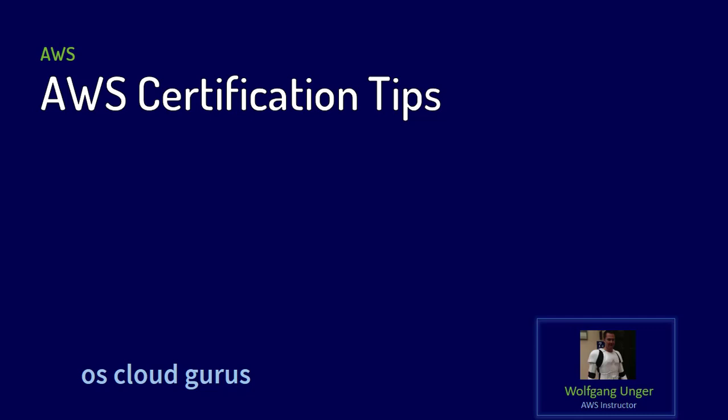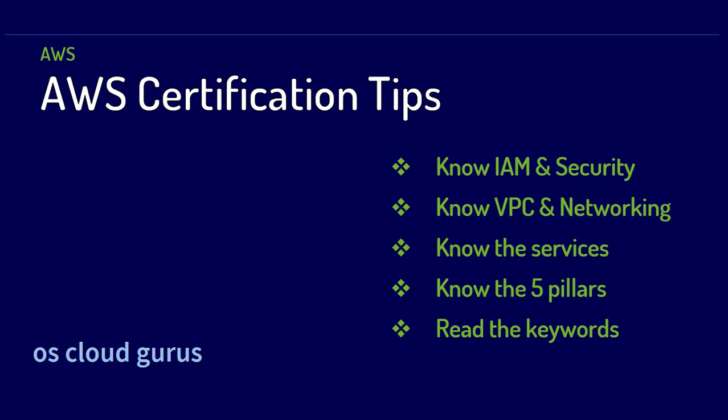Let's get an overview of what we'll cover. First, you have to know IAM and security, which is always a major topic in the exams. Another major topic is VPC and networking, which you should definitely know. Concerning other services, there are tons of them and you cannot know all of them, so we'll look at what is important to answer questions about less well-known services. Then there's the five pillars of the well-architected framework, and finally how to read the keywords in the questions.